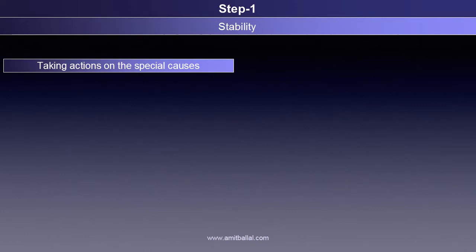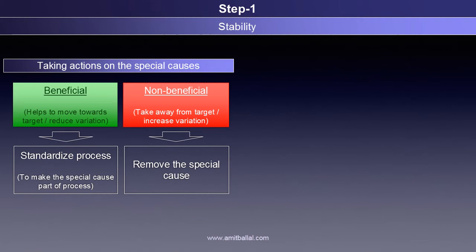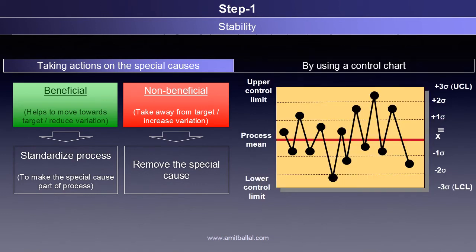For stability, the special causes in a particular process need to be identified, studied, and acted upon to ensure they don't show up again, since they can ultimately affect process performance. Acting upon these special causes doesn't always mean removing them. Instead, a thoughtful analysis is to be done whether the special cause is beneficial — helps us move towards the desired target or reduce variation — or non-beneficial — takes us away from the desired target or causes an increase in variation. If the special cause is beneficial, the process needs to be standardized to make it part of the process; if it is non-beneficial, it needs to be removed. We can't detect a special cause just by looking at the data; we need a tool that helps in this task, and that tool is the control chart.